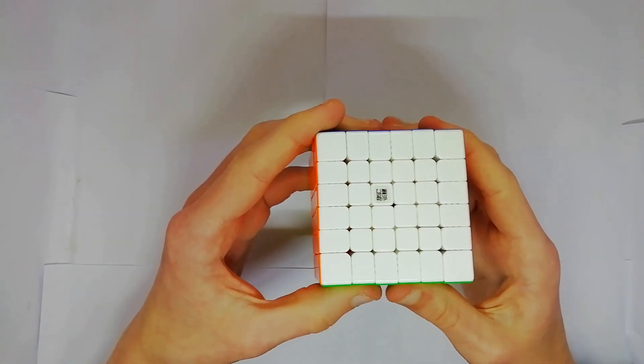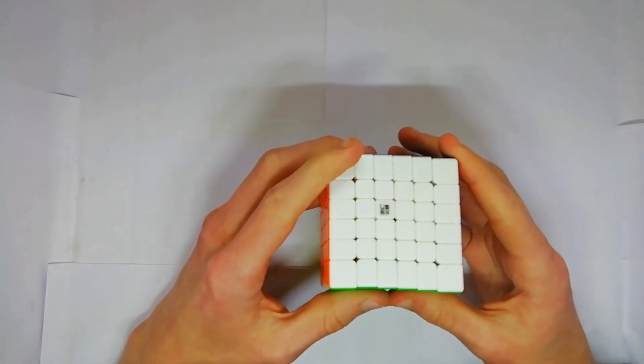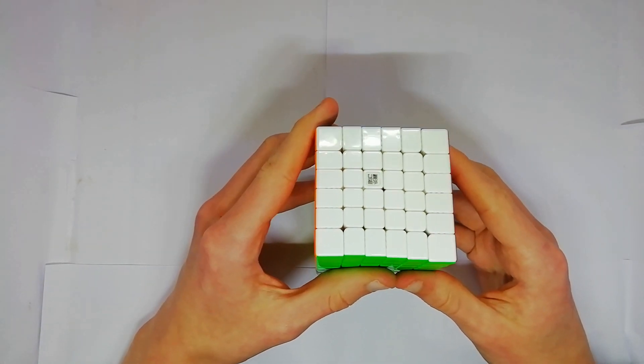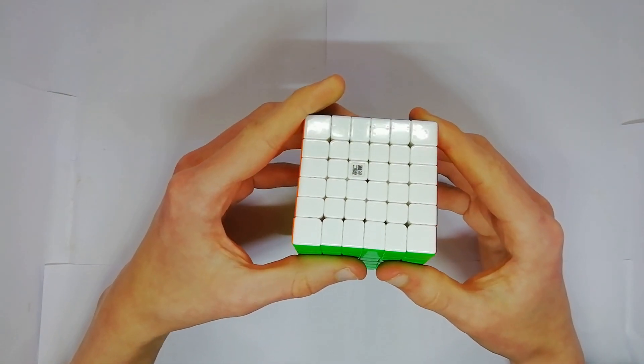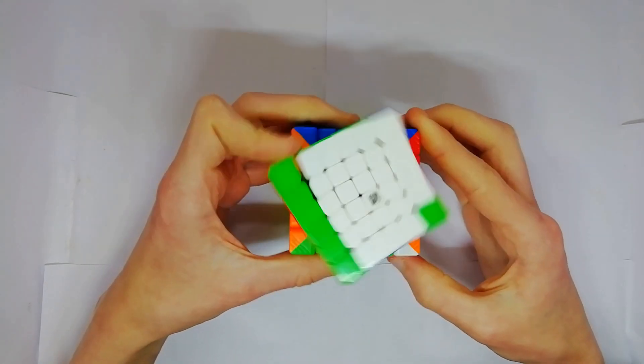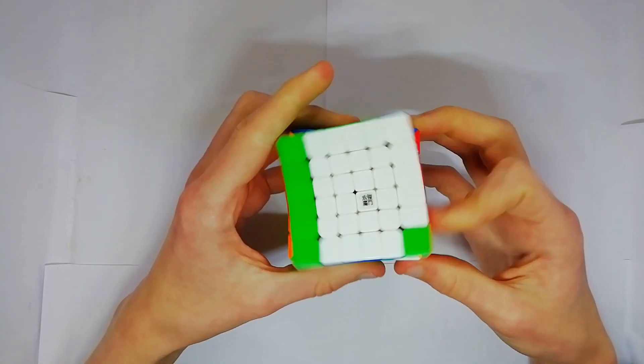So yeah, I strongly recommend that you tighten the tensions quite a bit if you get this cube, but once the tensions are tightened, any sorts of pops are quite rare, just like they are on most 6x6s these days.